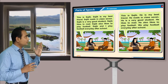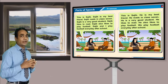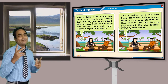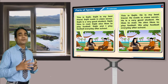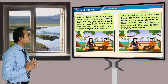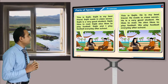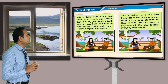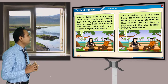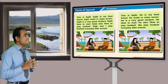Look, there is a wonderful text. Let me read the text — you listen very carefully because after reading the text you have to answer some questions. This is Shajib. Shajib is my best friend. Shajib reads in class 7. Shajib is a very good student. Shajib likes to read. Shajib also likes to play football. Shajib and I play football every day after school.